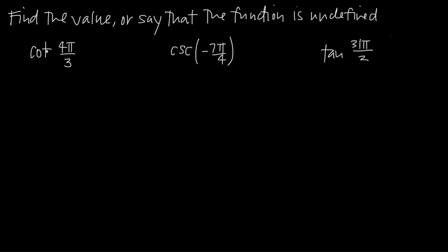The first example we're going to be doing is cotangent of 4π over 3. We want to take each of these trig functions and manipulate them until we can get them in terms of sine and cosine. Cotangent is the same thing as 1 divided by tangent, so we can rewrite this as 1 over tangent of 4π over 3 — that's the same thing as cotangent of 4π over 3.